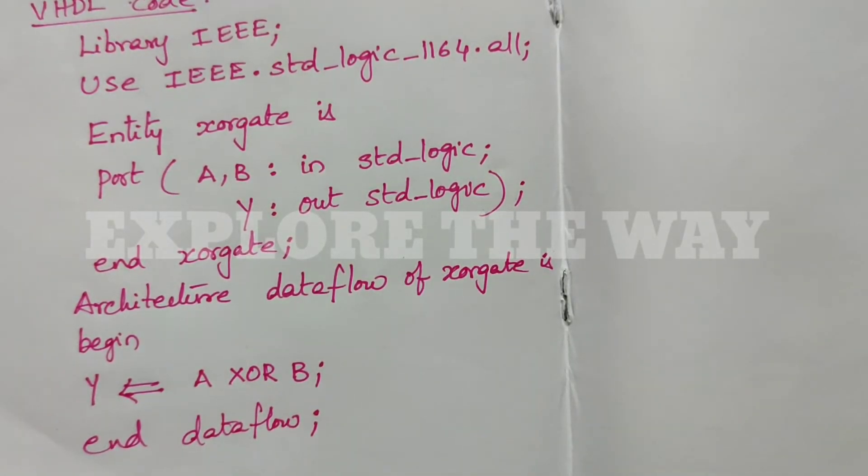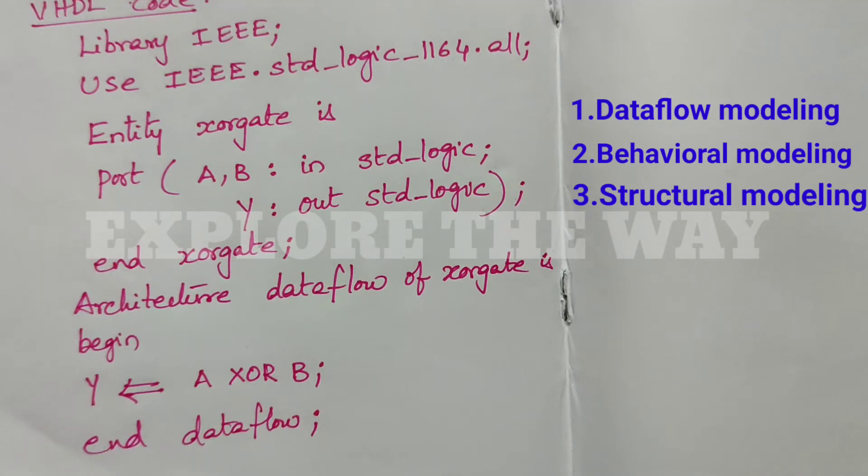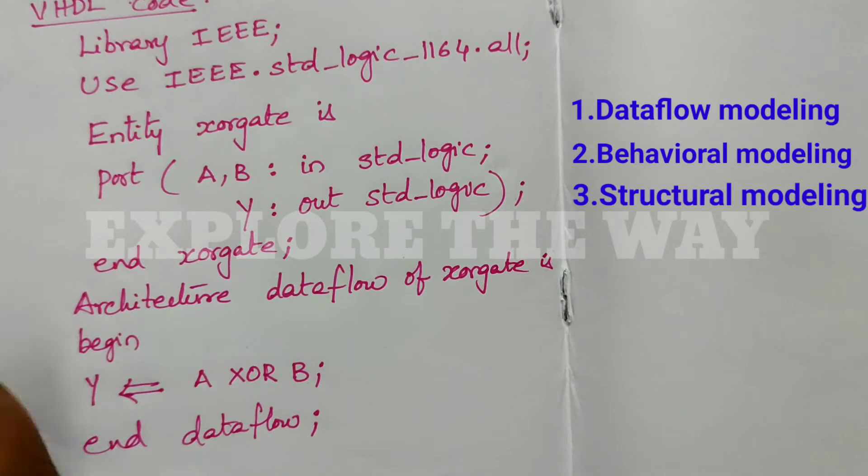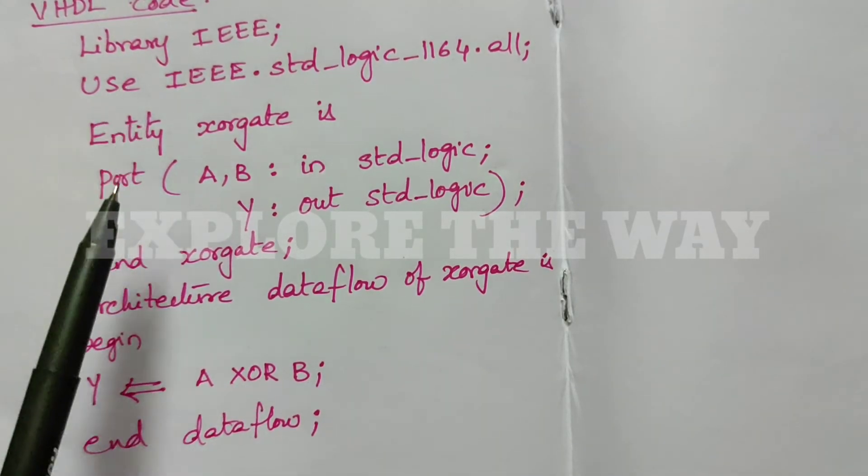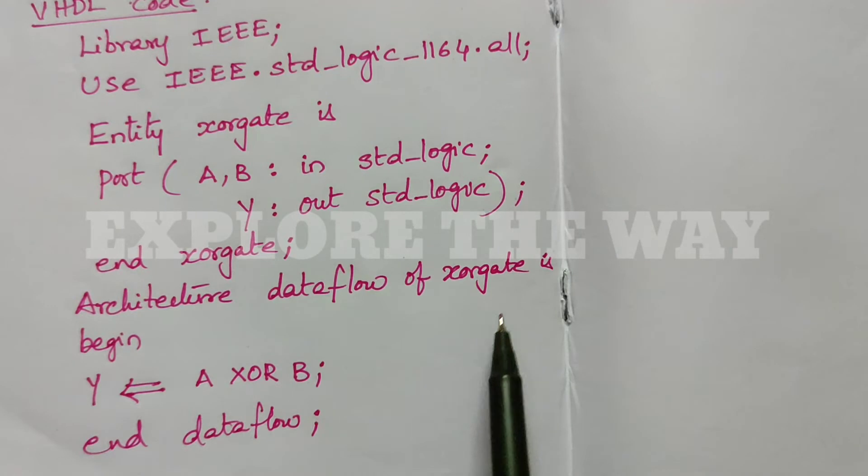Now, how to write the architecture in behavioral style. We can describe the behavior of any logic circuit using one of three modeling styles: dataflow, behavioral, or structural. But for all these cases, the library and entity parts are the same. Only the architecture will be changed.